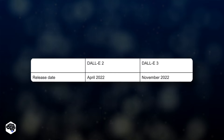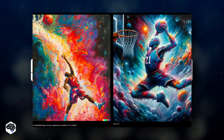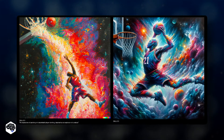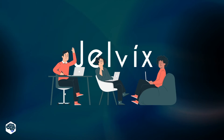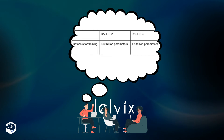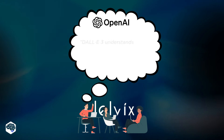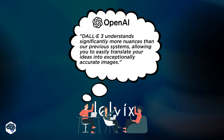And while only six months separate DALL-E 2 from DALL-E 3, the upgrades brought to DALL-E 3 are imminent. No wonder Jelvix designer Alex says it's all because of a much wider data set of parameters DALL-E 3 has been trained on. As OpenAI claims, DALL-E 3 understands significantly more nuances than previous systems, allowing you to easily translate your ideas into exceptionally accurate images.